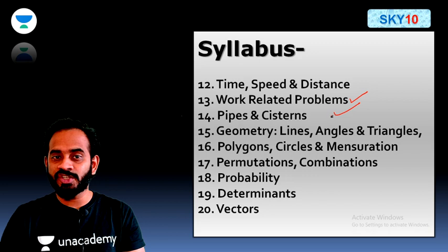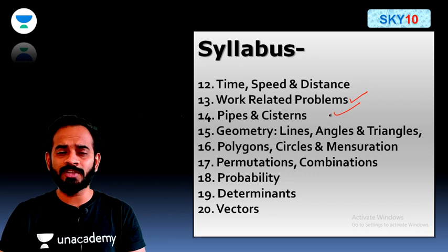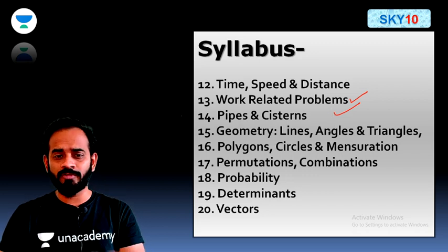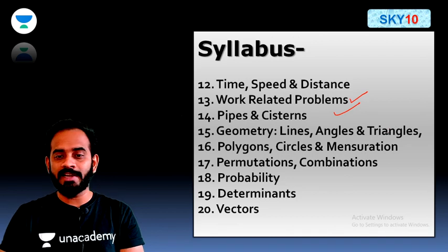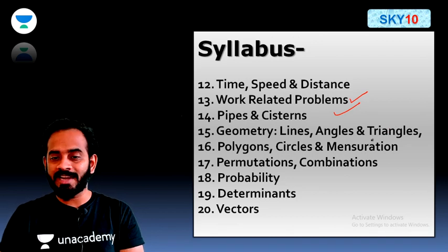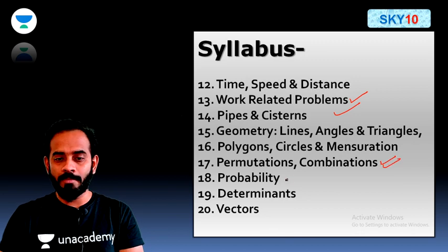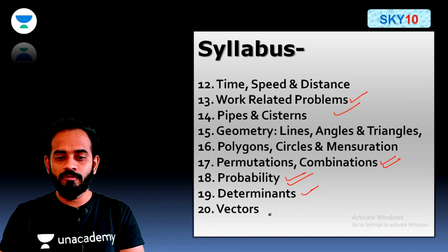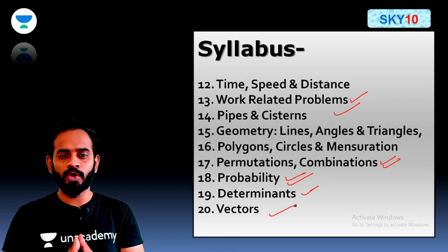For time and work questions we have an amazing chocolate method — using that you can solve almost all time and work questions. Geometry covers lines, angles, triangles, polygons, circles, and mensuration. Permutation and combination, probability — these are the modern maths parts — and determinants and vectors, which are advanced maths topics.